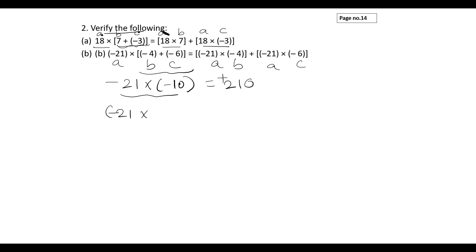On the other hand side, -21 × (-4) equals 84. -21 × (-6) will be 126. If you add these two numbers you will get 210.